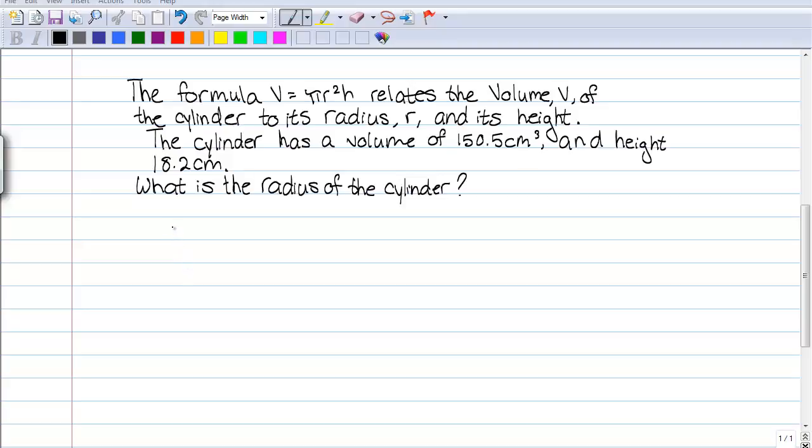What is the radius of the cylinder? So the formula we use is V equals pi times r squared times h. Now we substitute, so 150.5 equals pi times r squared times 18.2.